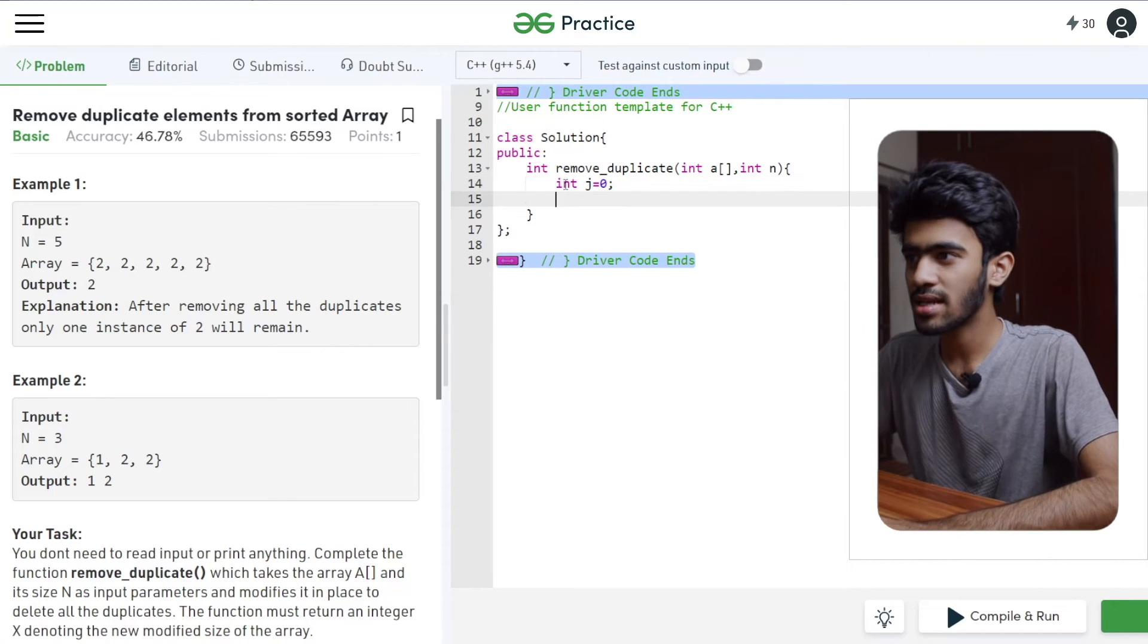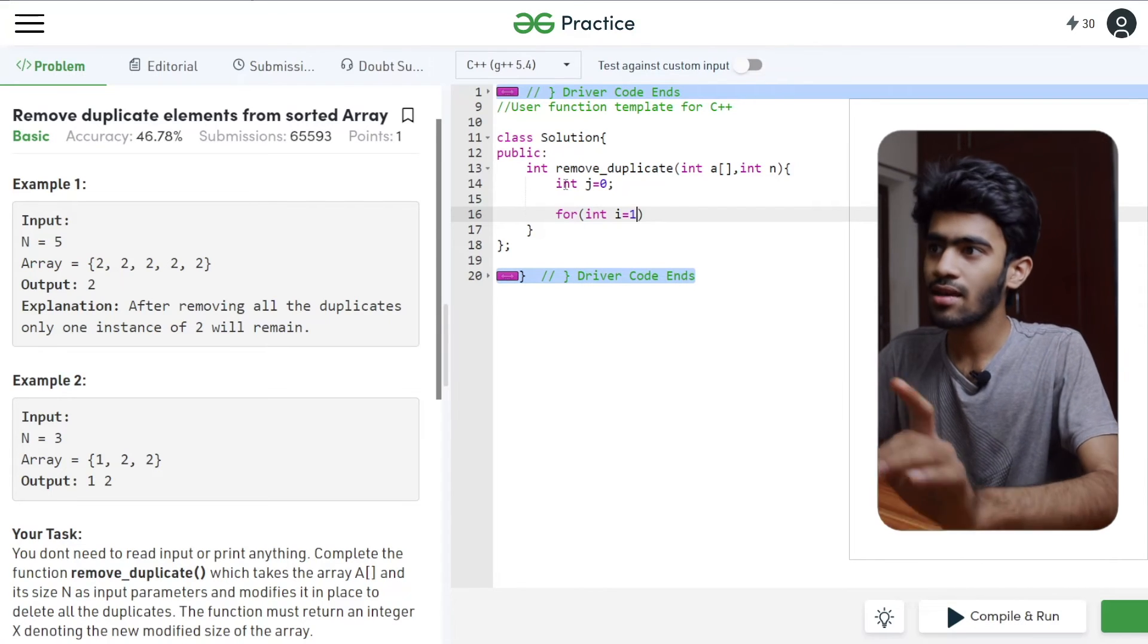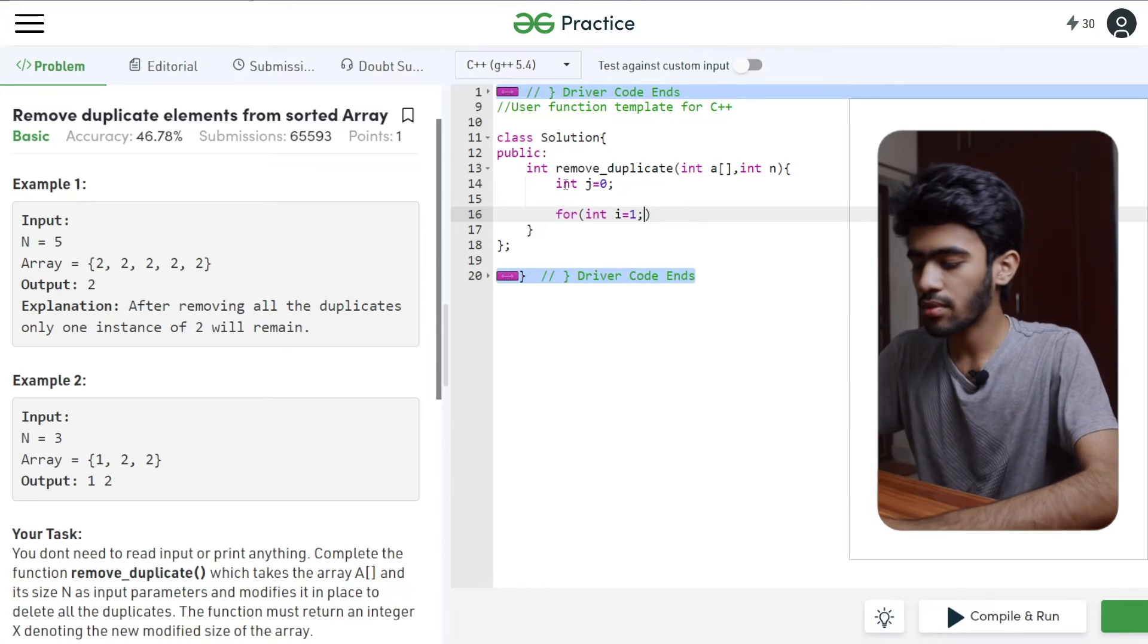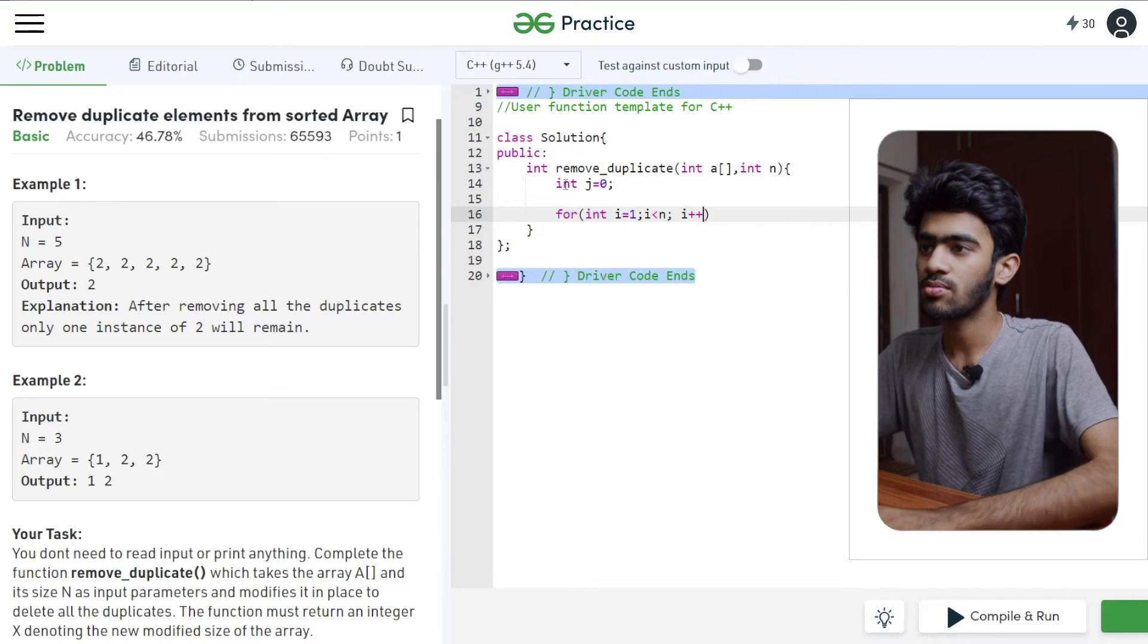So what we have to do is j. So for int i is equal to 0, not 1. So j is equal to 0, i is equal to 1. And i is less than n, then i++.